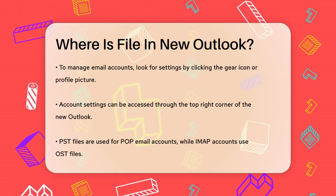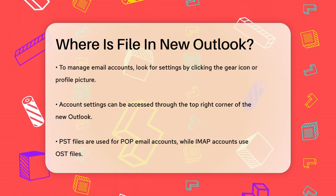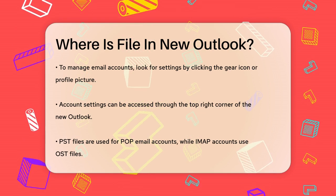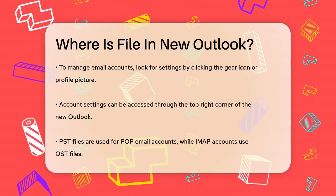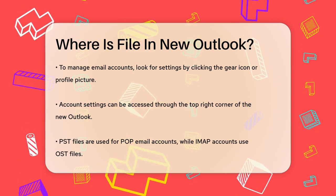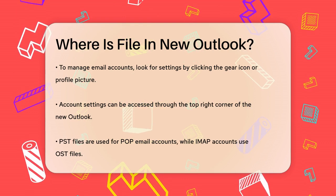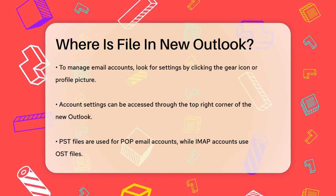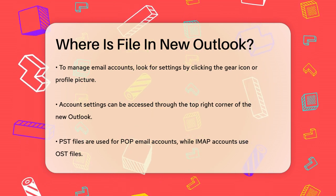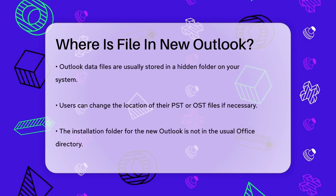One way to manage your email accounts is by using the settings within the new Outlook interface. You can usually find account settings by clicking on the gear icon or the profile picture in the top right corner and then selecting the relevant options.